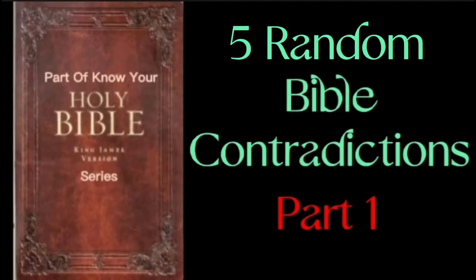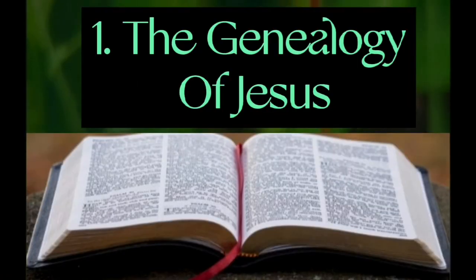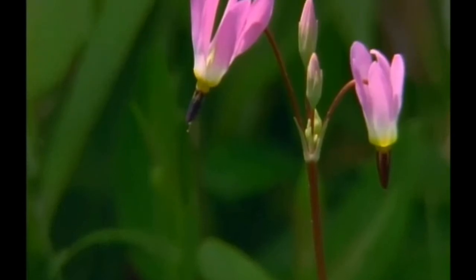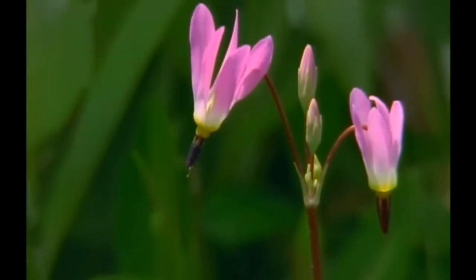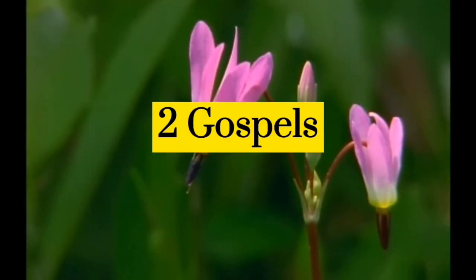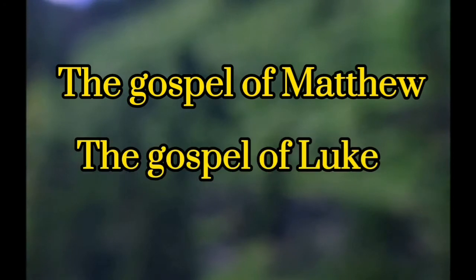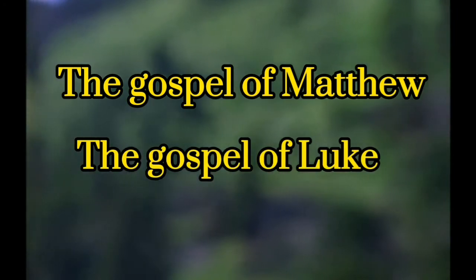5 Random Bible Contradictions Part 1. The Genealogy of Jesus. The genealogy of Jesus is found in two Gospels, the Gospel of Matthew and the Gospel of Luke. Let's see if they agree.